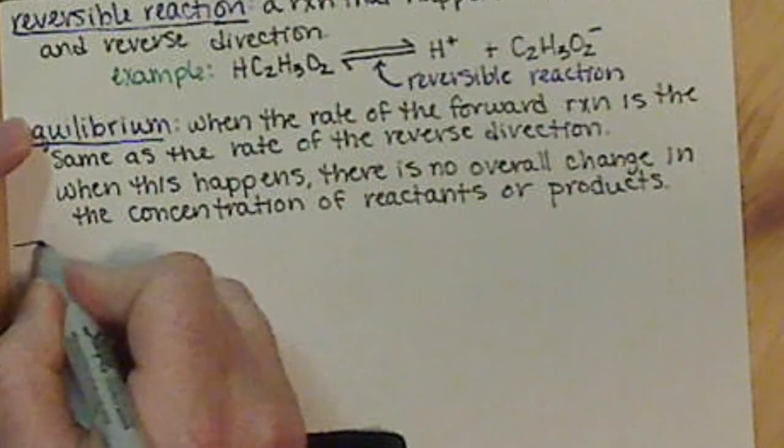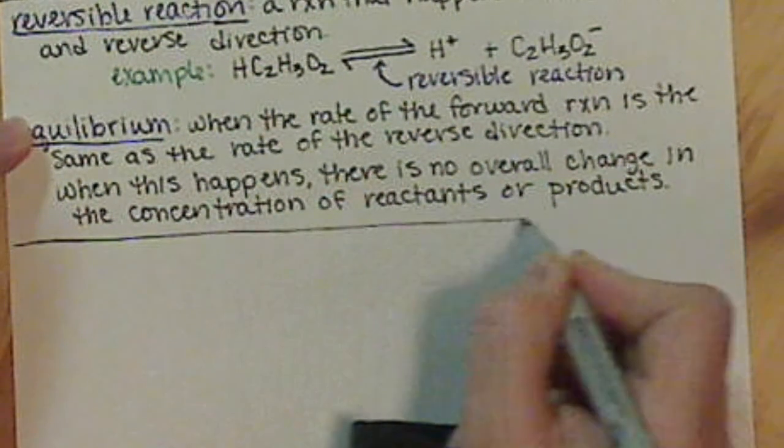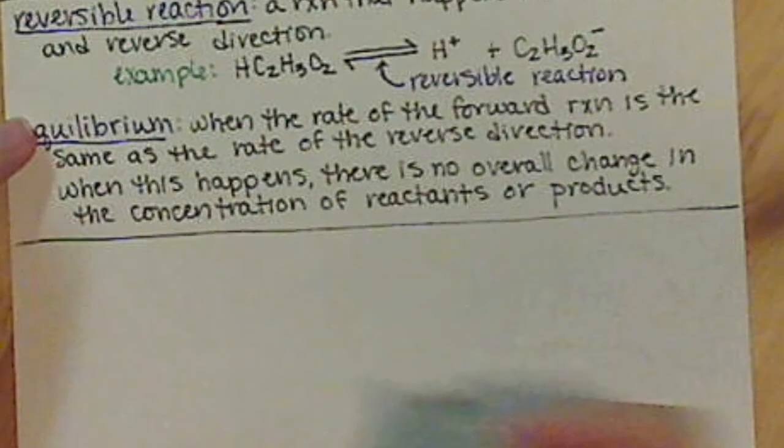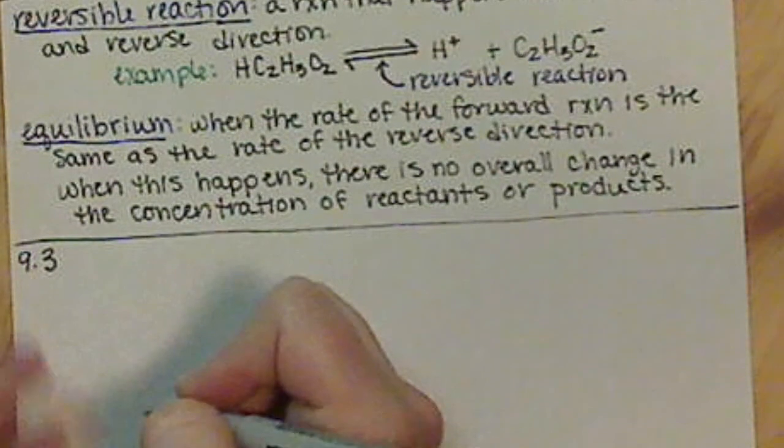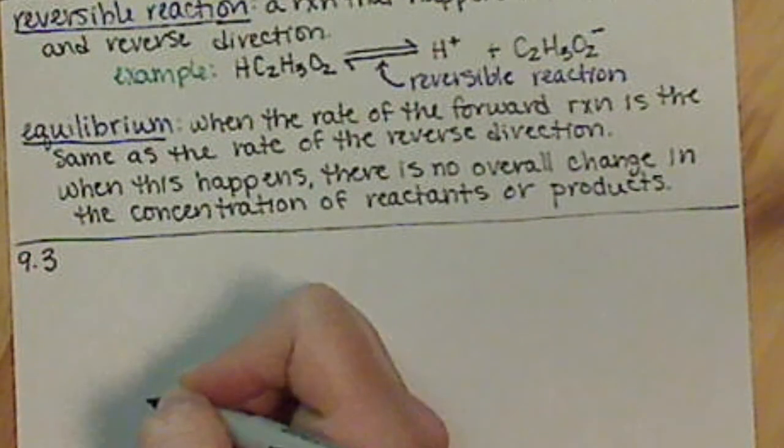Alright, so we have our basic definition or concept of chemical equilibrium. Now we're going to start applying this, and we're going to be looking at our equilibrium constants.